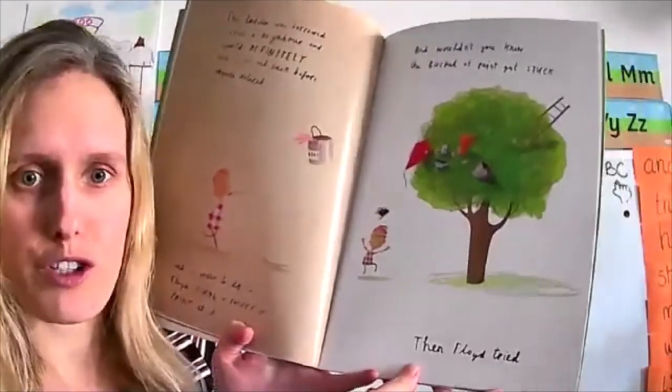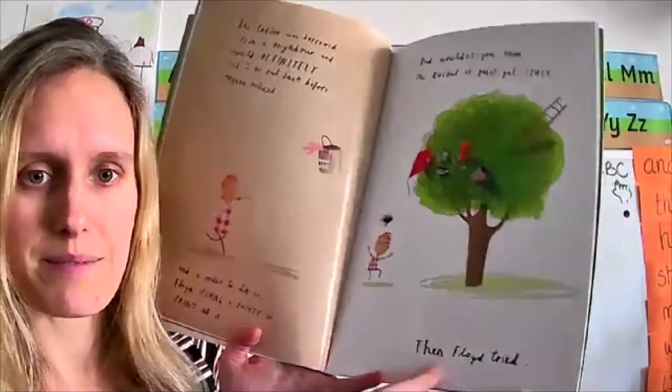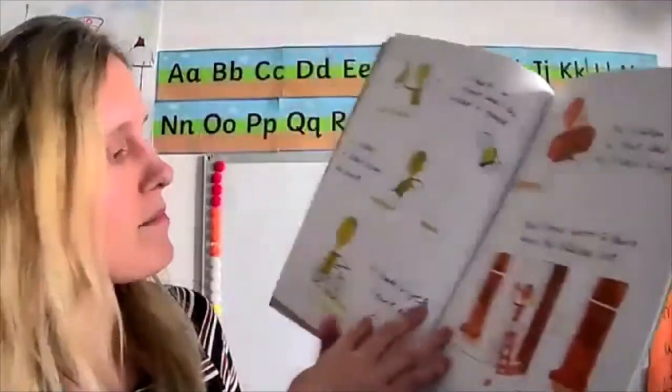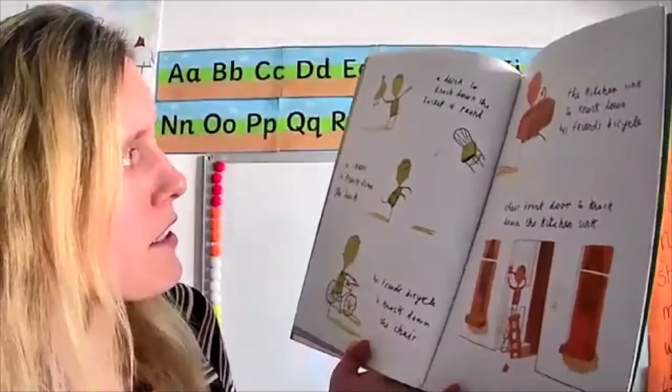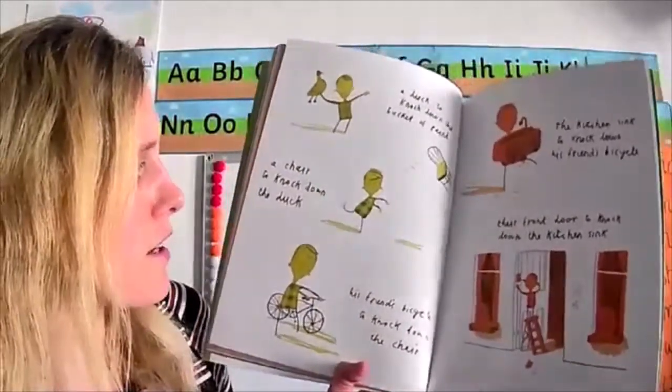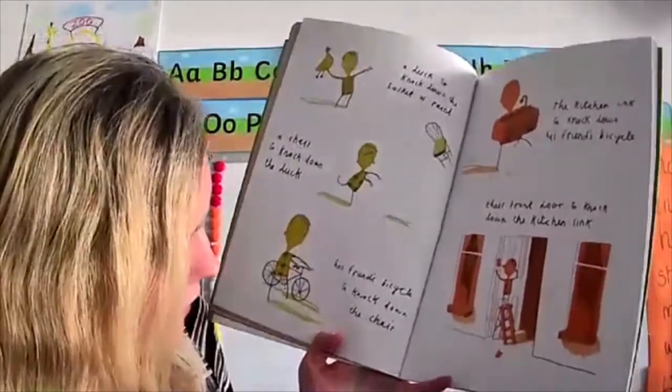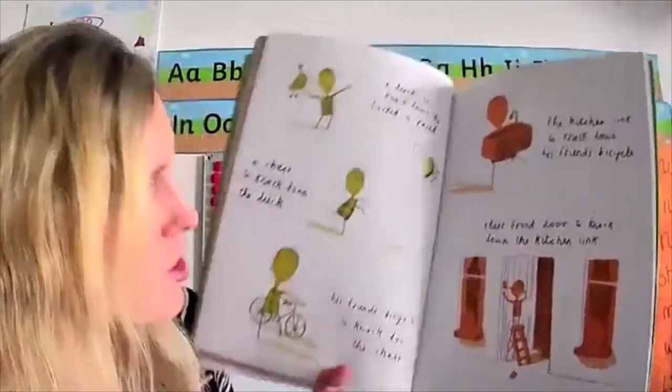Then Floyd tried a duck to knock down the bucket of paint. A chair to knock down the duck. His friend's bicycle to knock down the chair.